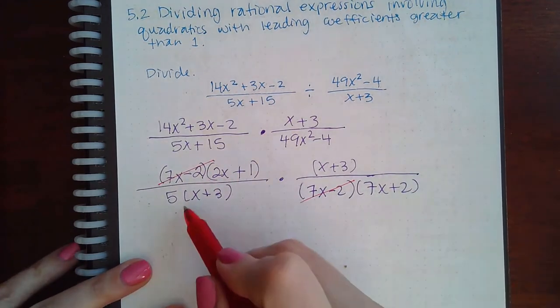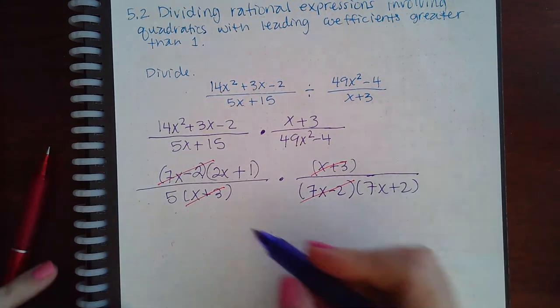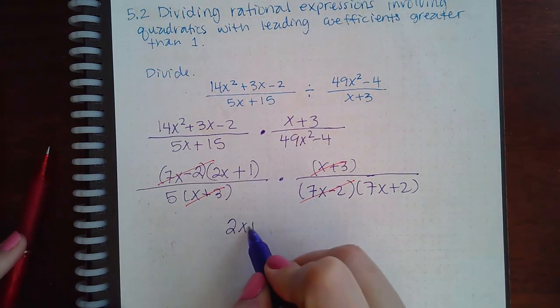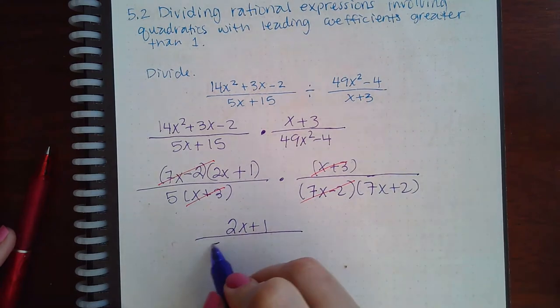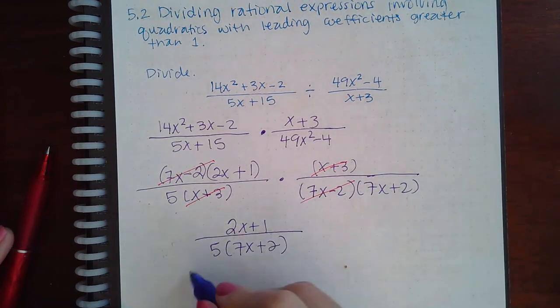So you end up with 2x plus 1 all alone in the numerator and then 5 times 7x plus 2 in the denominator and that would be the final answer.